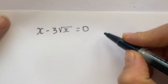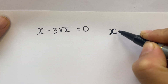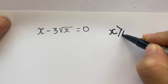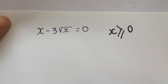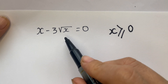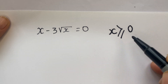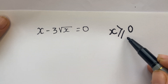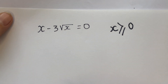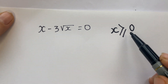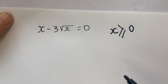In this case, x is greater than or equal to 0. Because everyone can see that the square root of a number is greater than or equal to 0, therefore x has to be greater than or equal to 0.